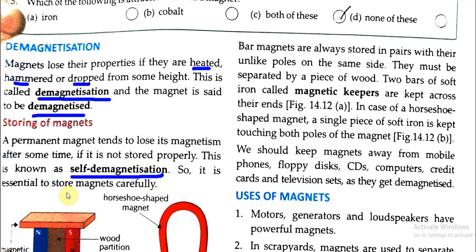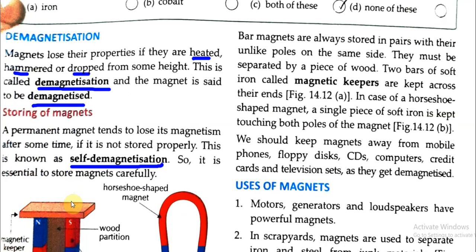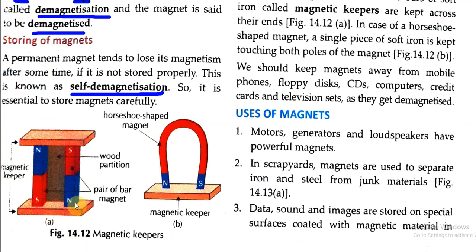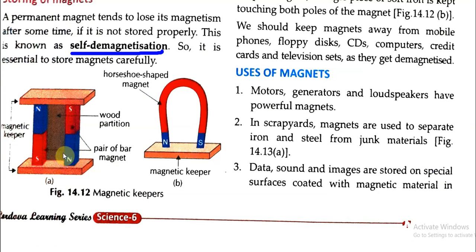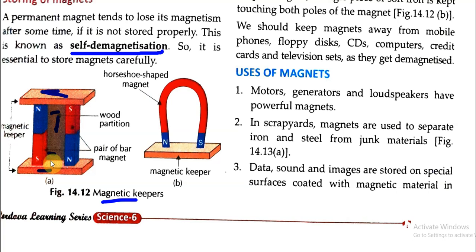So it is essential to store magnets carefully. You can see the magnetic keepers here. Two bar magnets are placed with two wooden pieces separating them. The south pole is placed opposite the north pole, and the north pole opposite the south pole — unlike poles facing each other. These soft iron pieces are the magnetic keepers.